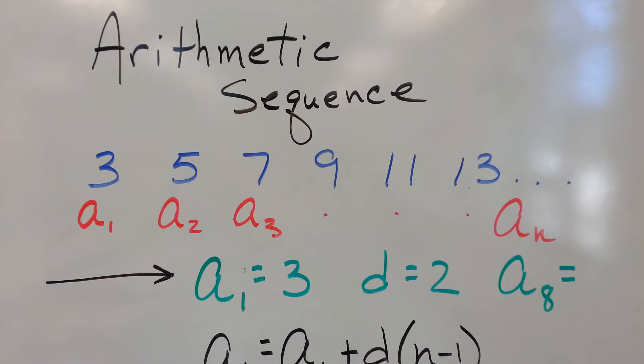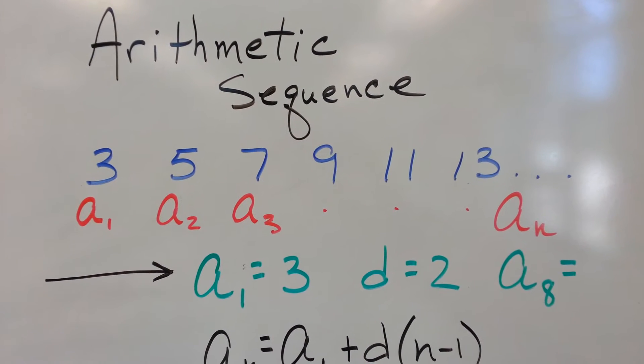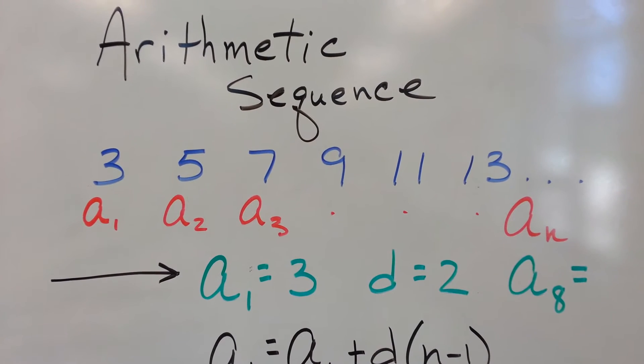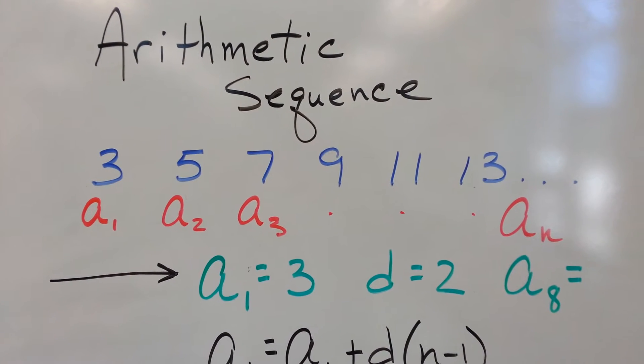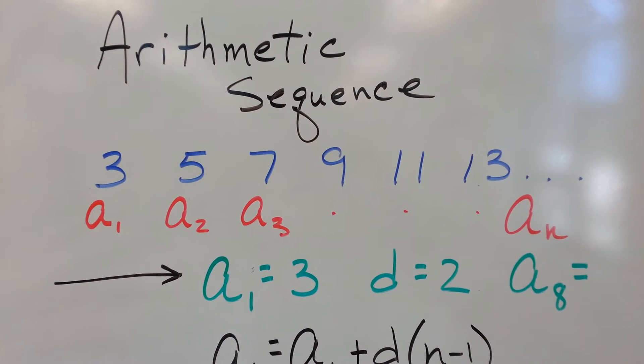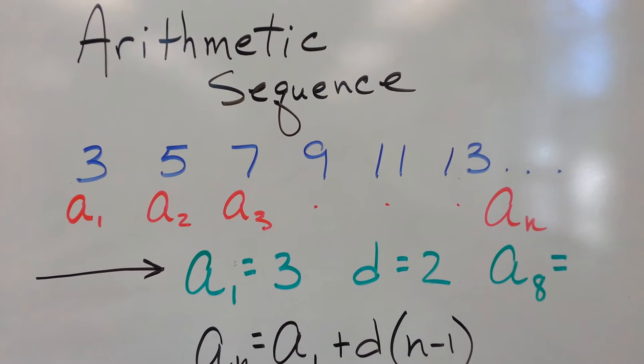The first term in this sequence is 3. The second term is 5. The third term is 7. Do you see that? And so we name these things A₁, A₂, A₃. It doesn't mean that the third term is 3. It means 7 is the third term in our sequence. Get it?